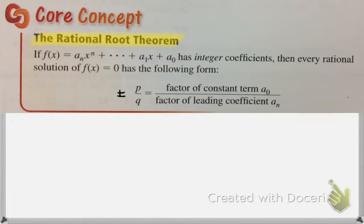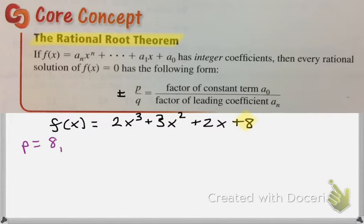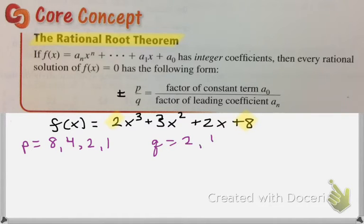So if I have something like this, and I look and I say I can't easily factor this polynomial, I can create a list of potential answers. First I'm going to list out my p values, which are all of the factors of 8: so I have 8, 4, 2, and 1. And then I'm going to list all my q values, which are the factors of my lead coefficient, which in this case is 2: so 2 and 1.